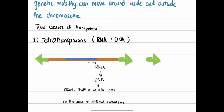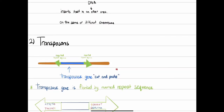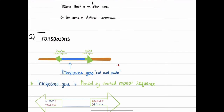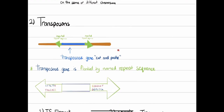The second class of transposons has the ability to transcribe and then translate a gene that cuts and pastes the transposon into different spots in the genome.